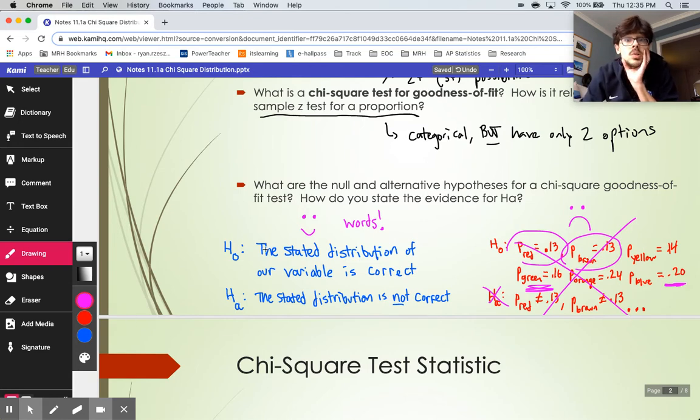So this is how you're going to state your hypotheses for a chi-square problem. H0, the stated distribution is correct. HA, it's not correct. It's just easier that way.